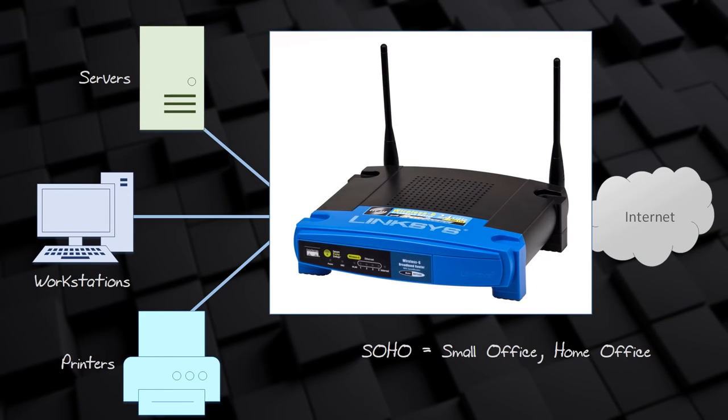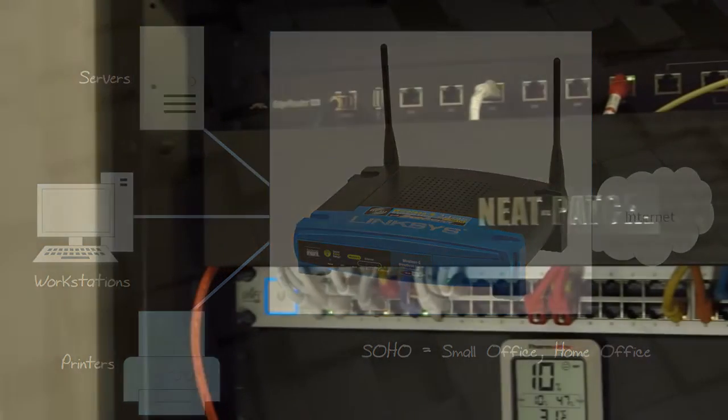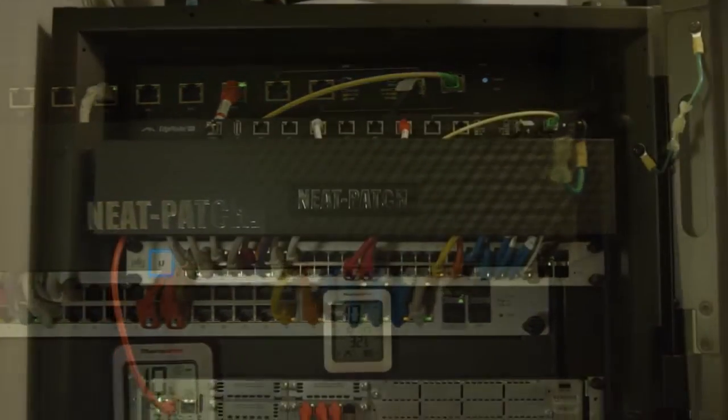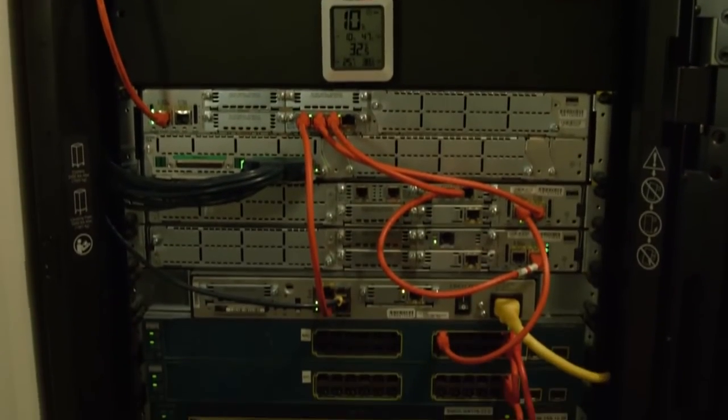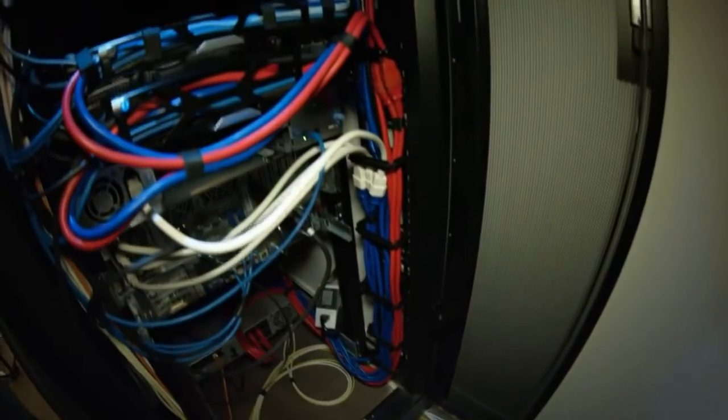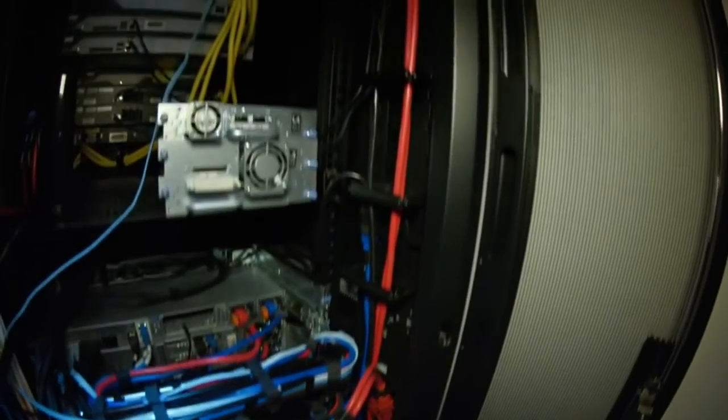In a SOHO network, a router is used to connect to the internet. You might find that the router, switch, and access point are all integrated into one device. While a SOHO network will only have a few devices, a corporation — for example, a bank — will have many devices. This is called an enterprise network. The enterprise network may cover several floors in a building, and may also span several office buildings in different cities or even across different countries. An internet provider has a very large network called a service provider network — not only do they provide internet access, they also offer services to connect their customers together.